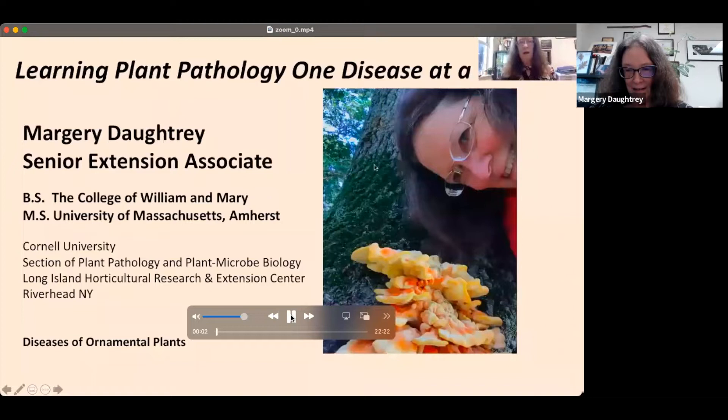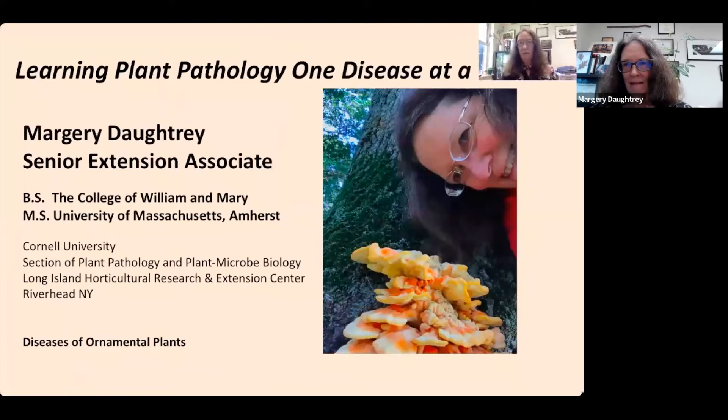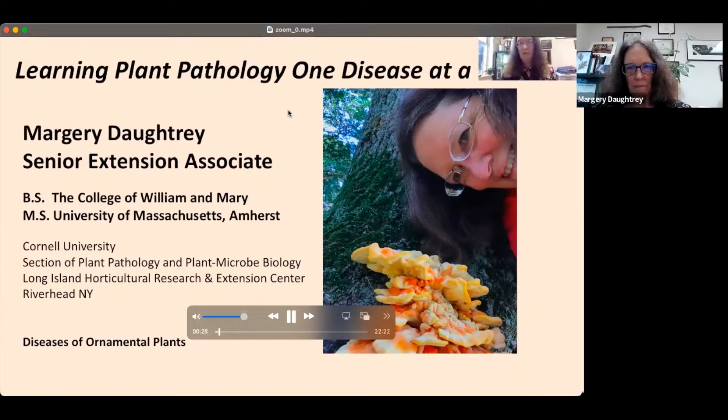Hello, everyone. I'm Marjorie Daughtry, a senior extension associate with Cornell University. I've been asked to give a pod talk on learning plant pathology one disease at a time, which is how I found it to be. I have a bachelor's from the College of William & Mary and a master's from UMass Amherst. I've been working for Cornell University since 1978 here on Long Island at the Long Island Horticultural Research and Extension Center, and I specialize in ornamental plants — or, as Christy Palmer would say, environmental horticulture plants.